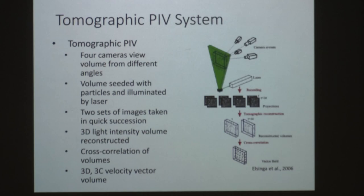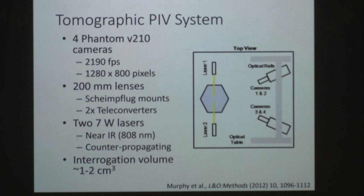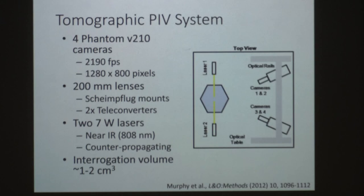Our system used four phantom cameras filming up to 2,000 frames per second, with 200-millimeter lenses and a 2x teleconverter for increased magnification. We used Scheimpflug mounts to correct for off-axis distortion. For illumination we used two continuous seven-watt lasers firing in the near-IR range at 808 nanometers in a counter-propagating position — firing towards each other to both increase power and prevent shadowing from the animal in the measurement volume.